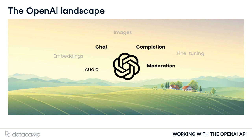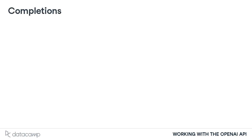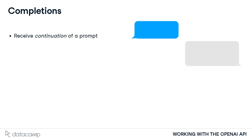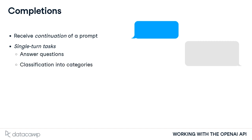For now, let's take a closer look at the text capabilities available through the API. The Completions endpoint allows users to send a prompt and receive a model-generated response that attempts to complete the prompt in a likely and consistent way. Completions is used for single-turn tasks as there's a single prompt and response. However, the models available via this endpoint are extremely flexible and are capable of answering questions, performing classification tasks, determining text sentiment, explaining complex topics, and much more.